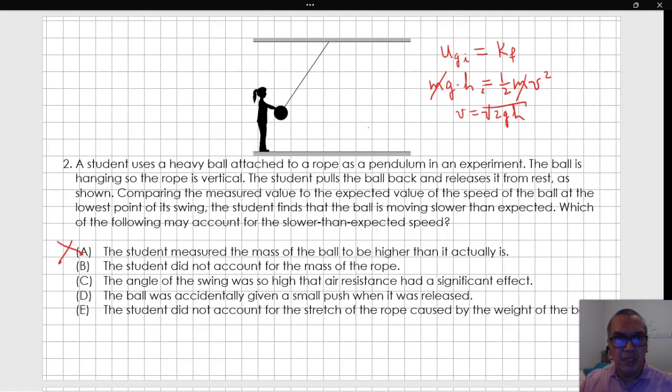Option B: The student did not account for the mass of the rope. If the mass of the rope is not negligible, then the gravitational potential energy that we have at the beginning is distributed into two different kinds of energy.